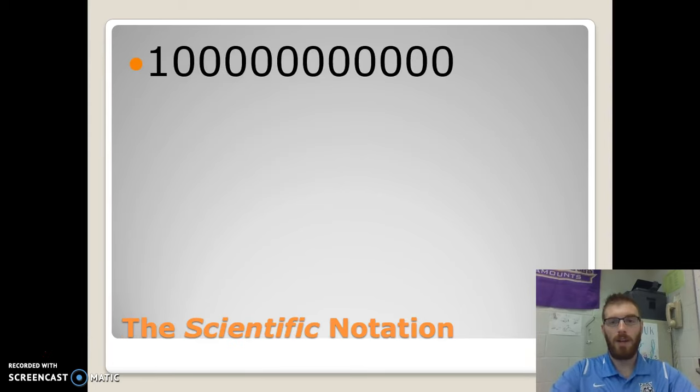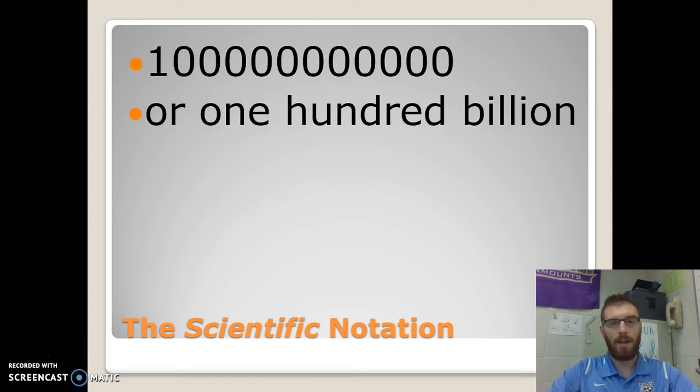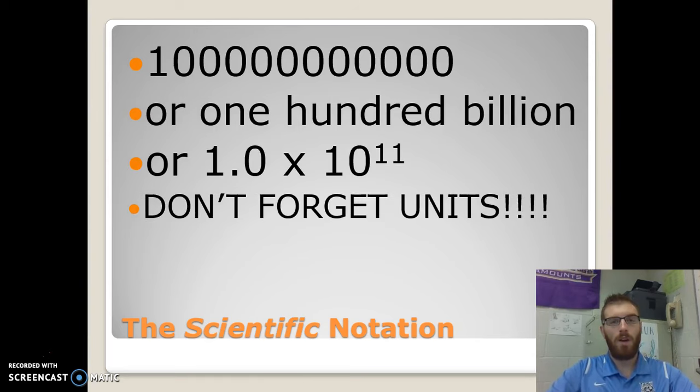All right, scientific notation is simply a way to write very, very big numbers in a smaller package. So the number 100 billion can be written as 1.0 times 10 to the 11th. Basically, what you'll do is you'll move your decimal place over in order to get it in here.